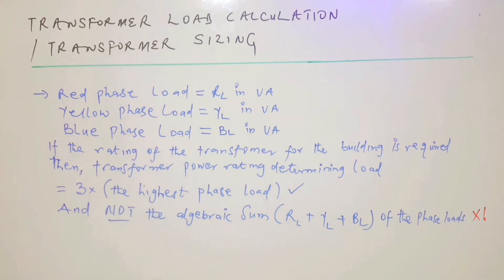VA means volt ampere and it takes care of the situation where power factor is not unity, that is not being one. If it is involved, it takes care of it. That's why the power rating is usually calculated in VA, which is the unit of apparent power.